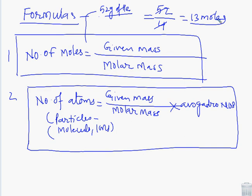Now if we have to find the number of atoms, then we use the formula: given mass upon molar mass into Avogadro number. Now we have the number of atoms here. Then number of particles, we can write number of molecules, number of ions, we use the same formula: given mass upon molar mass into Avogadro number. So this is the formula we use to find number of moles.